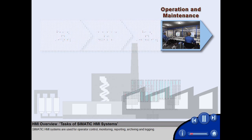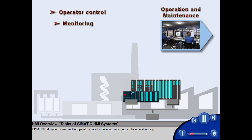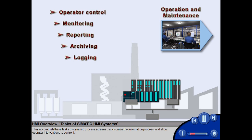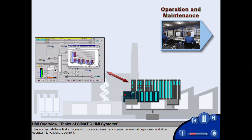SIMATIC HMI systems are used for operator control, monitoring, reporting, archiving and logging. They accomplish these tasks by dynamic process screens that visualize the automation process and allow operator interventions to control it.